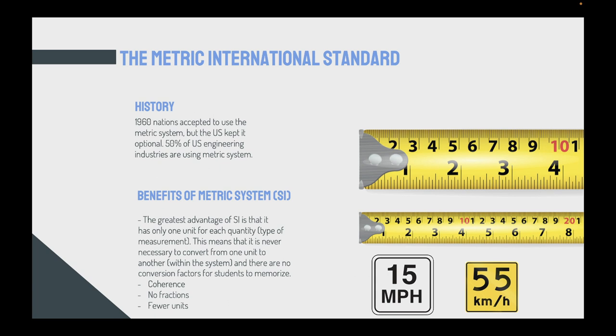What are the benefits of the metric system? The greatest advantage for the SI or metric system is that it has only one unit for each quantity or type of measurement. It means that you will never need to convert from one unit to another within the same system. While in the U.S., if I ask how tall you are, you would say 6 feet 3 inches. So you have two units within the same length, which just complicates things more.